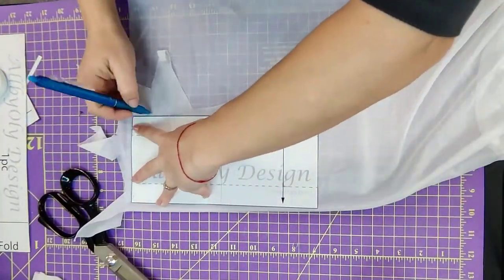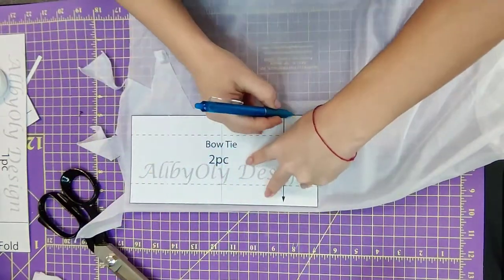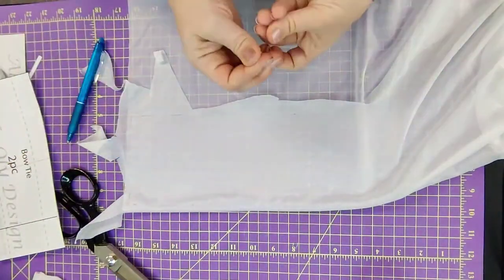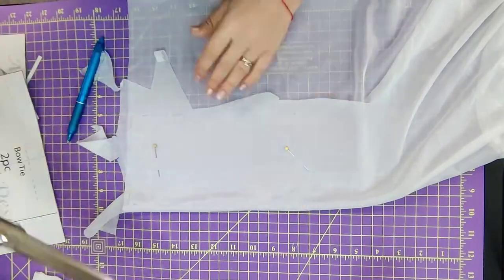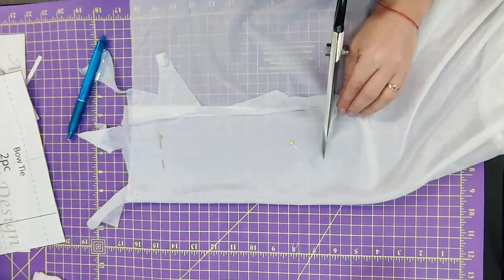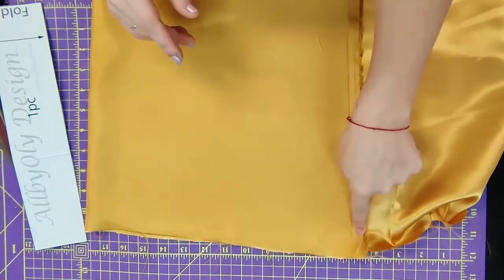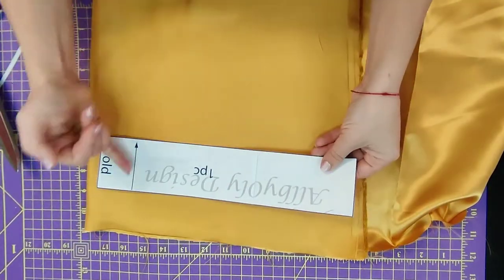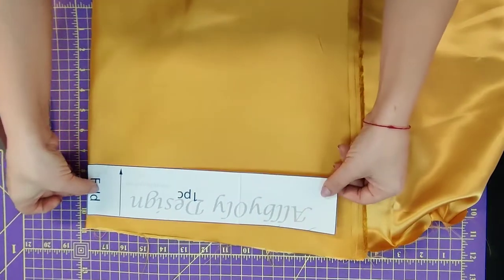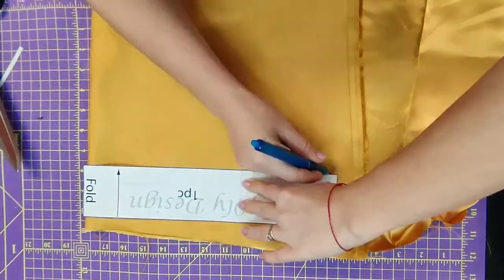Same thing with the upper pattern. We need two pieces, then put a couple pins and done. Now we repeat exactly the same process with the right fabric. Make sure the direction of the fabric is correct, just like the pattern says, and cut all the patterns around.